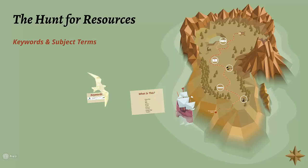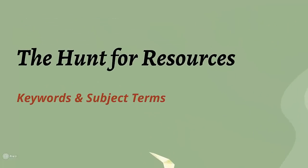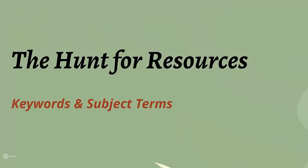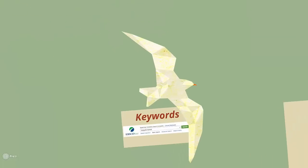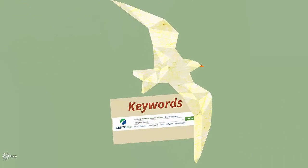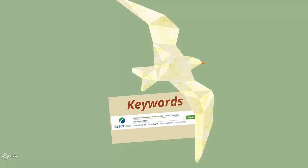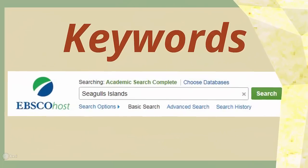When on the hunt for a perfect set of search results, there are certain tools and techniques that you can use to help dig up the best resources. The two most important are keywords and subject terms. Keywords are the words and phrases that are typed into a search box and dictate how many results you find in a search and how relevant they are to your topic.